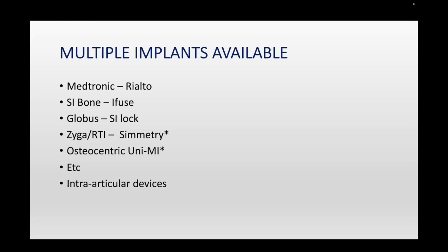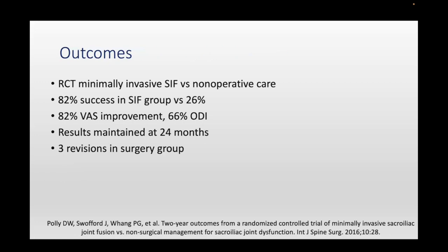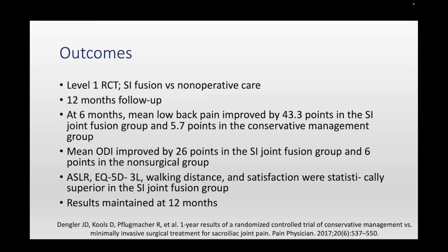Looking at outcomes, the randomized control trial by Dr. Pali and his group showed a much higher success rate in the SI fusion group. Improvement in VAS and ODI were maintained at two years. They did have three revisions — I typically quote a screw complication incidence of 1-2% to my patients, and sometimes you will have to revise the screw. Another 12-month follow-up paper showed superior low back pain scores, ODI, and functional scores including EQ-5D in the operative group.